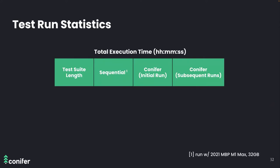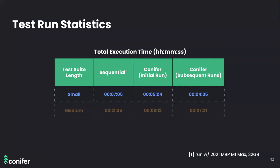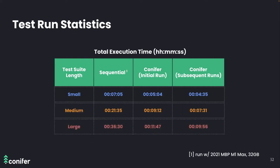Let's compare total test run execution time for test suites of different lengths on a local machine versus with Conifer. The device used was a 2021 MacBook Pro with an M1 Max chip and 32 GB of RAM. For a small test suite taking around seven minutes locally, Conifer results in about five minutes, then four minutes 35 seconds on subsequent runs. A medium test suite taking 21 minutes 35 seconds locally takes just over nine minutes on Conifer initially, and seven and a half minutes for subsequent runs.